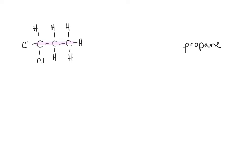So when we name this, the root is going to be propane for the three carbons, and we have chloro as our halogen. We've got two of them, so it's dichloro. And what carbon are they attached to? They're attached to carbon number one. This becomes 1,1-dichloropropane.